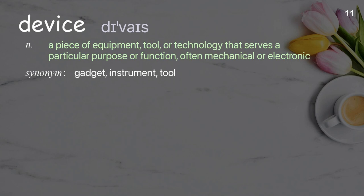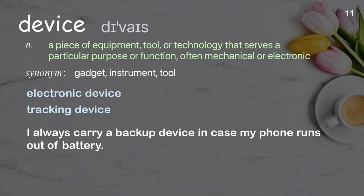Device: A piece of equipment, tool, or technology that serves a particular purpose or function, often mechanical or electronic. Examples: Electronic device. Tracking device. I always carry a backup device in case my phone runs out of battery.